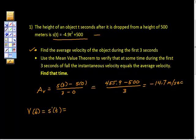And the first derivative of this position happens to be negative 9.8T. And we want to say that this equals the average velocity here, so equals negative 14.7.